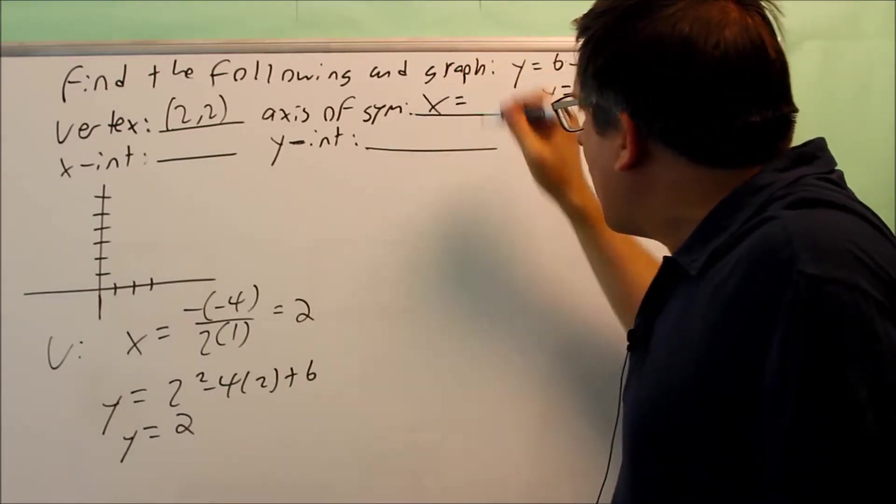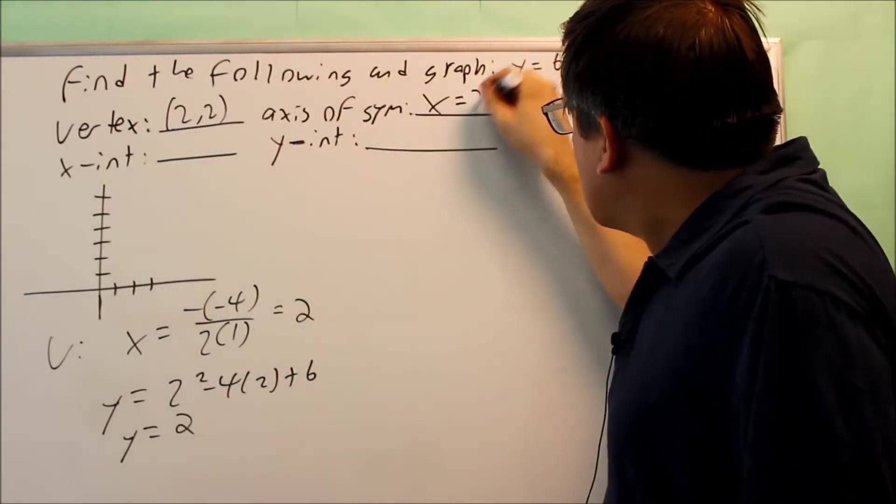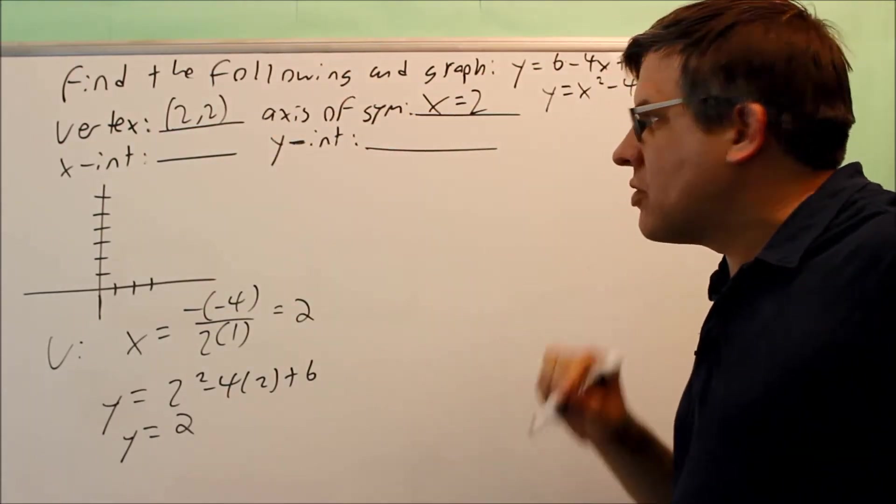My axis of symmetry, it's always x equals the x coordinate of your vertex. So it's going to be x equals 2 for axis of symmetry.